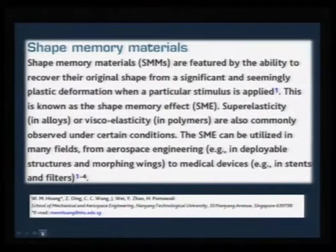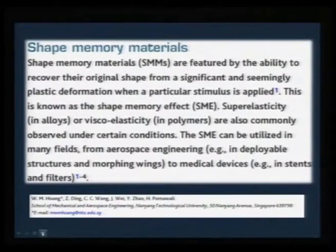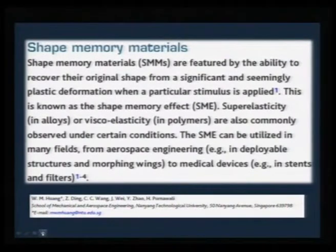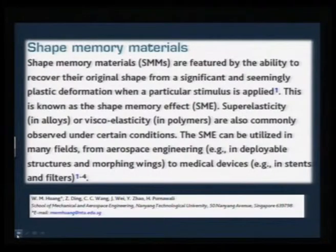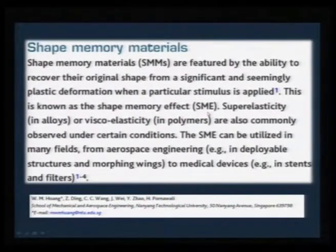To start with, let us go through some basic definitions. Shape memory materials, classified as SMMs, are featured by their ability to recover their original shape from a significant and seemingly plastic deformation — you can pull it and after a particular stimulus it can come back to the same shape. This stimulus can be either pressure, temperature, or light. This is known as the shape memory effect, abbreviated as SME.